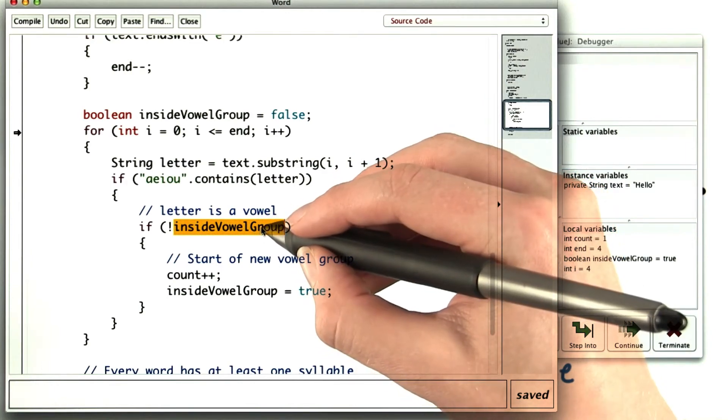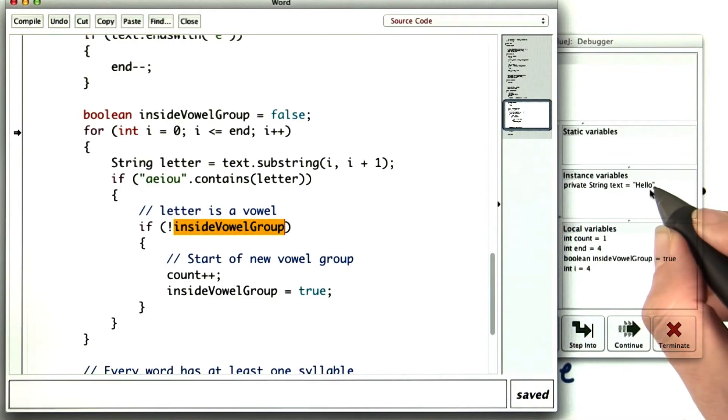Inside vowel group should be false, because the letter before O was L, which is a consonant.